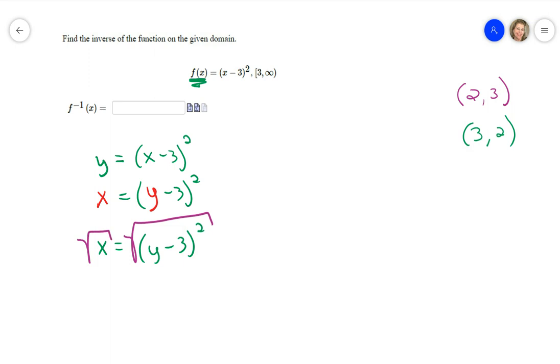So that's going to leave me with the square root of X on the left, and then remember that the square and the square root cancel each other out, so I'm just going to be left with the Y minus 3. I can drop the parentheses because it's not squared anymore, and now I'm going to add 3 to both sides.